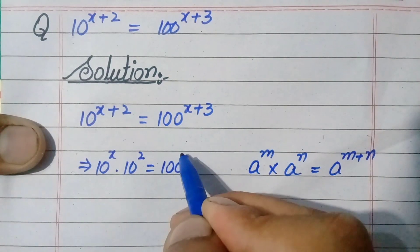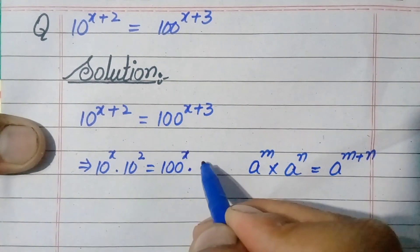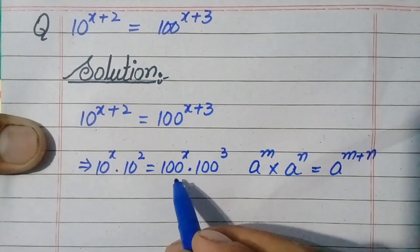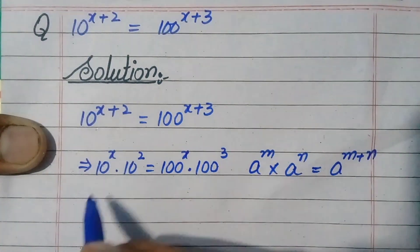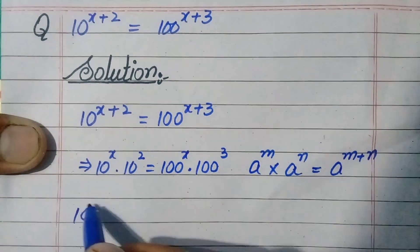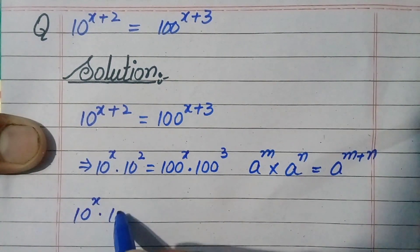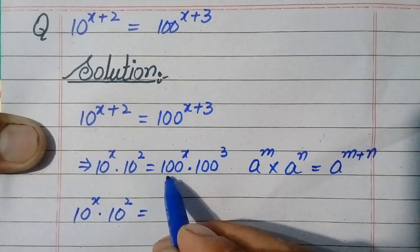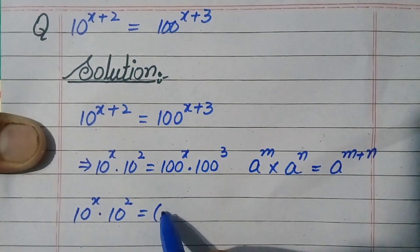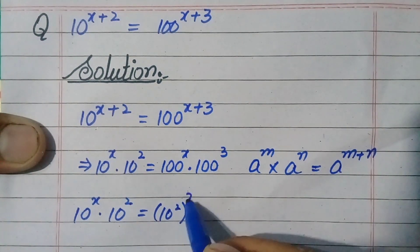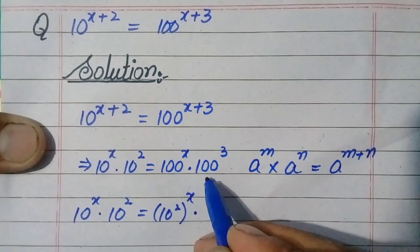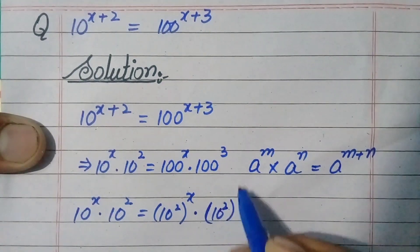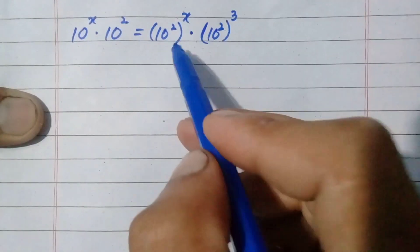On the right-hand side it will become 100 raised to power x multiplied by 100 raised to power 3. Now this right-hand side can also be rewritten by substituting 100 as 10 raised to power 2. So we replace 100 with 10 raised to power 2, giving us: 10 raised to power x times 10 raised to power 2 equals (10 raised to power 2) whole power x, multiplied by (10 raised to power 2) whole power 3.